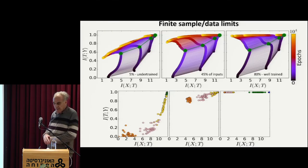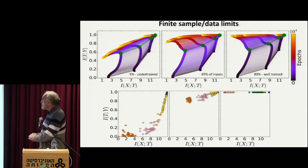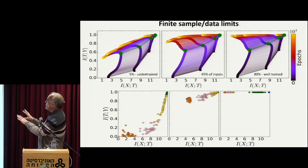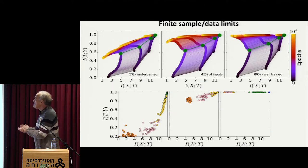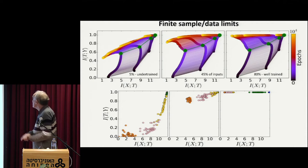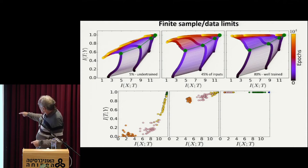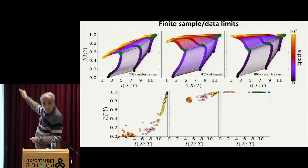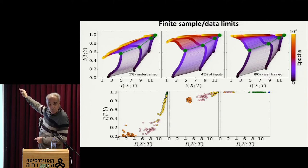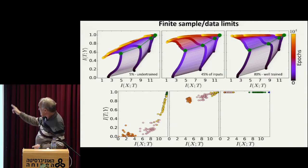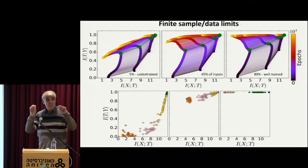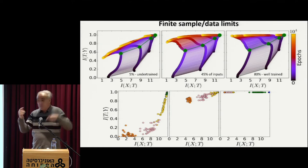I just want to show you what happens with finite data. The color here is from black — zero — the number of epochs, all the way to 10,000 epochs in yellow. Those traces are colored by the number of epochs so you see the dynamics. And you see — this is with 80% of the samples — and there is with the 5% of the sample, which is clearly under-trained.